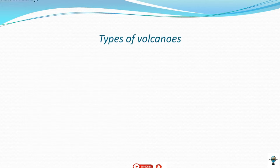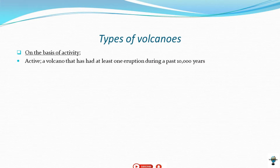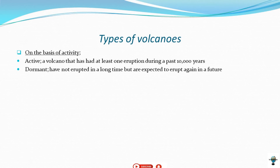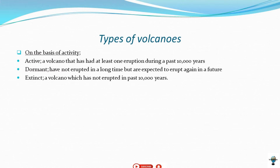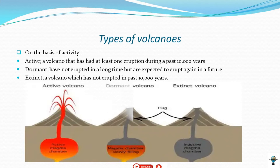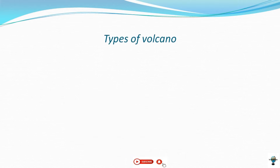In terms of types of volcano based on activity, they are divided into three. Active volcanoes have erupted at least once during the past 10,000 years. Dormant volcanoes have not erupted in a long time but are expected to erupt again in the future. Extinct volcanoes have not erupted in the past 10,000 years. Here are some sketches that explain such scenarios.